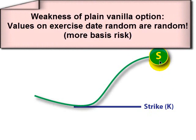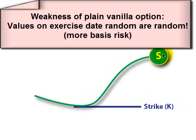In a plain vanilla option, we use the spot price at the time of exercise. One disadvantage is that we're exposed to the temporal volatility of that spot price. For example, if we're using the option to hedge against a foreign exchange rate, the value of the option is very much dependent on the particular volatility or daily outcome of that foreign exchange rate. We may not want to be so exposed to that volatility — and this is where the Asian option helps.